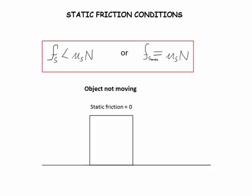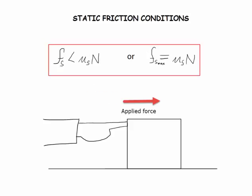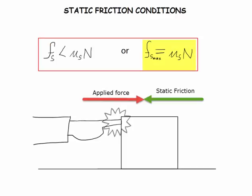Before we talk about these two specific conditions, we're first going to have an object that is not moving. This means that static friction is zero. Let's say you apply a force to an object. If you keep applying the force eventually, the static friction will hit a maximum just before it starts to move. So at this point, we have the static friction equaling mu and the normal force.